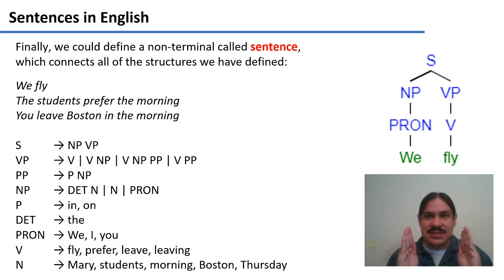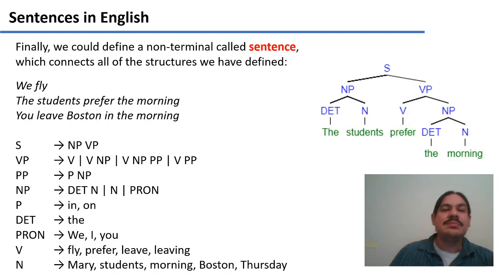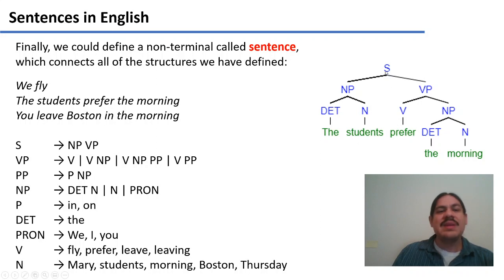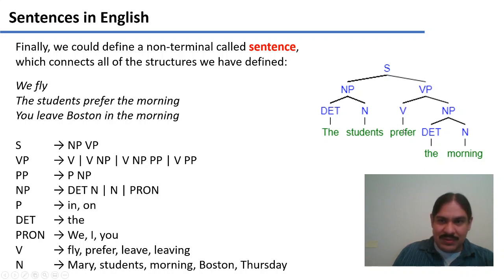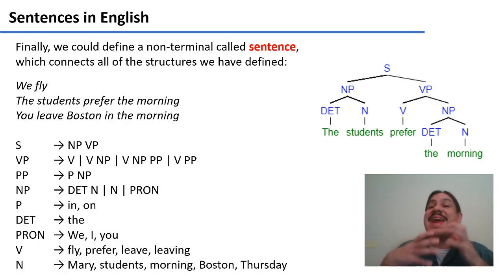For 'the students prefer the morning,' we start with a sentence, then get to a noun phrase for the subject 'the students' — the noun phrase has a determiner 'the' and a noun 'students.' The sentence also has a verb phrase 'prefer the morning,' which has the subcomponents: verb with terminal 'prefer,' and a noun phrase as the direct object with determiner 'the' and noun 'morning.' Prefer what? The morning. Who prefers the morning? The students. These hierarchies in the tree give you information about which elements are related to which.